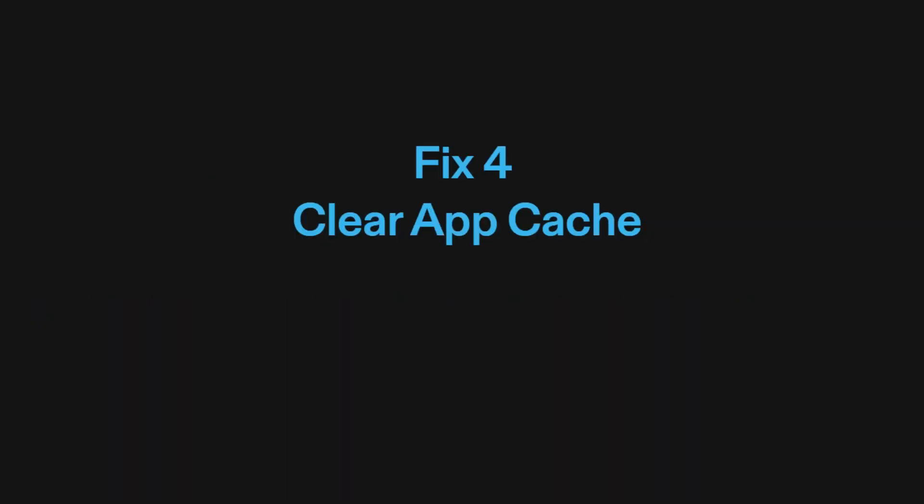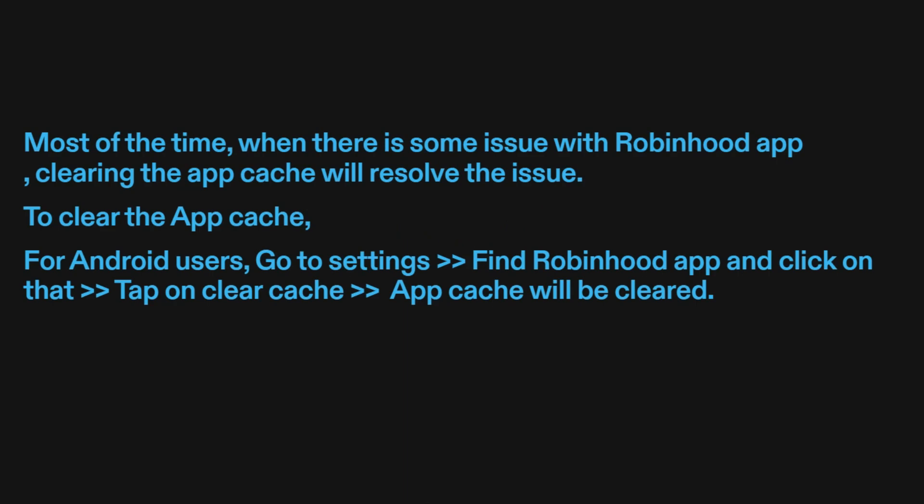Fix four: clear app cache. Most of the time when there is some issue with the Robinhood app, clearing the app cache will resolve the issue. For Android users, go to Settings, find the Robinhood app and click on it, then tap on Clear Cache. The app cache will be cleared.